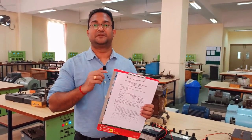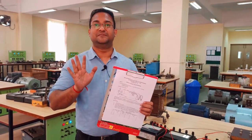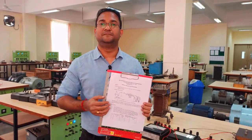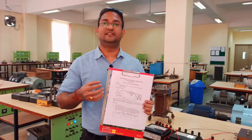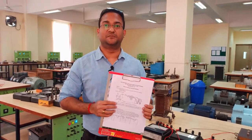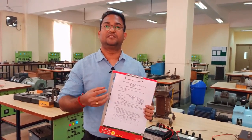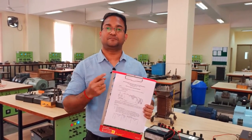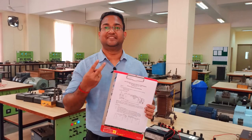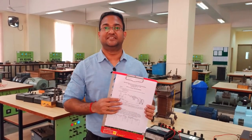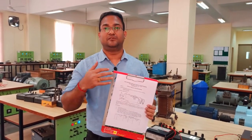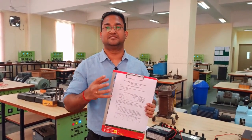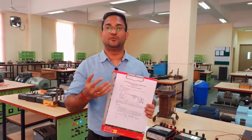We are going to perform experiment number 5, which is on the single phase transformer. The objectives are to see the efficiency and regulation of a single phase transformer. To do that, we are going to perform two tests: one is the open circuit test and the other is the short circuit test. There are mainly two types of losses in a transformer — one is the copper loss and another is the core loss.